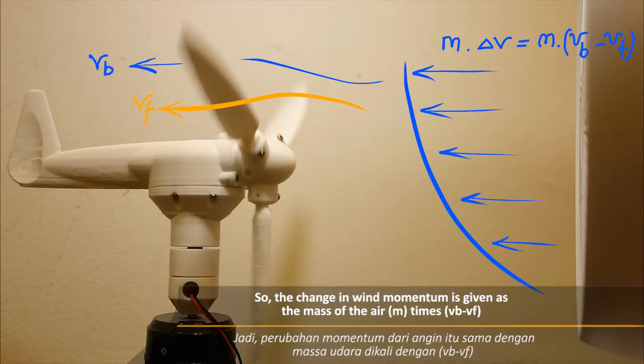So the change in wind momentum is given as the mass of the air, m, times vb minus vf.